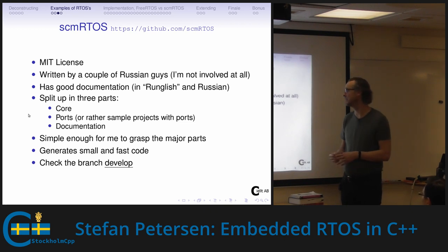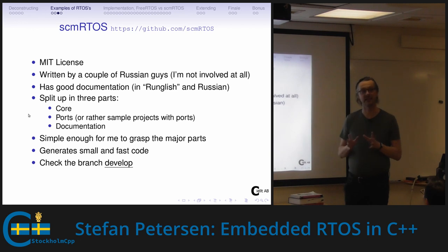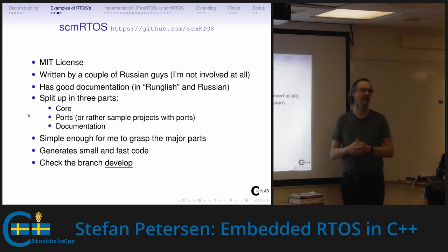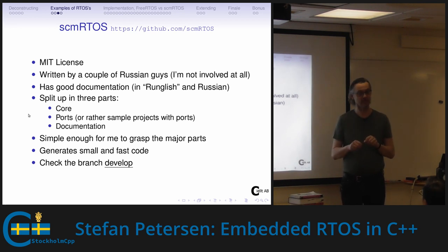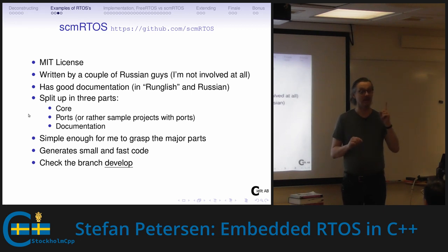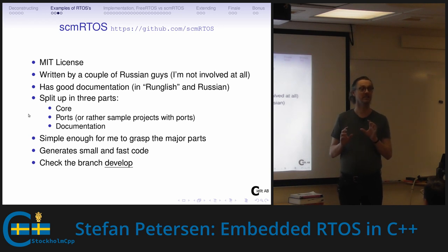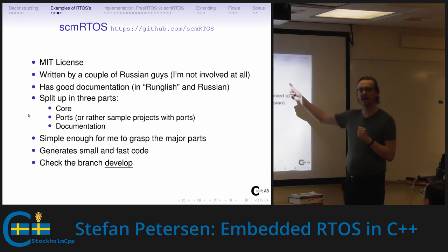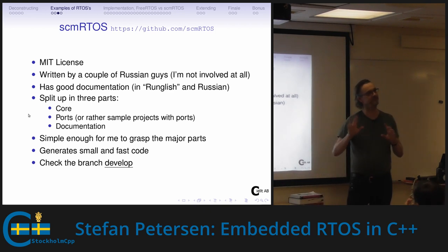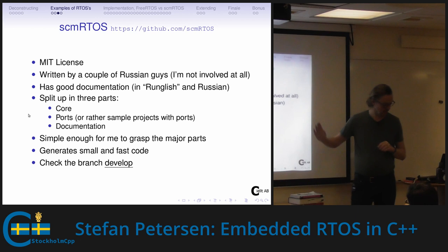The documentation is simple enough to grasp what it does and how — and simple here means good. It generates very small and fast code. I did a git clone, typed make, it compiled with no warnings and no errors. The binary was one kilobyte. At the time I was also experimenting with an ST library for a simple blinking LED program, which was six kilobytes — here I got a complete RTOS at one-sixth the size. If you check it out, use the 'develop' branch — master is lagging behind.